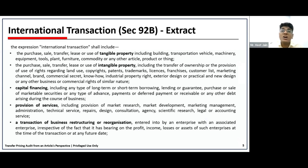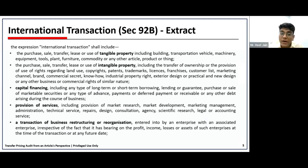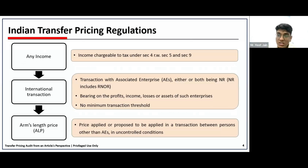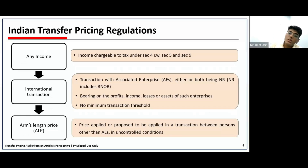The definition also includes any service provided or any business restructuring or business reorganization type of transaction. This is an inclusive list, so the list can be expanded based on interpretations and judicial pronouncements. Importantly, Section 92 does not provide any minimum threshold limit for transfer pricing computation — even a transaction of value one rupee gets covered under international transaction, meaning it has to be reported and computed at arm's length.